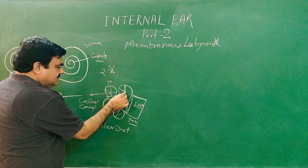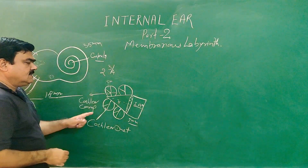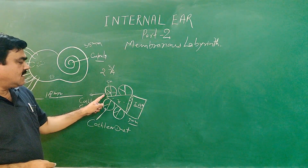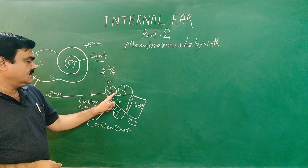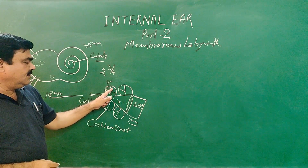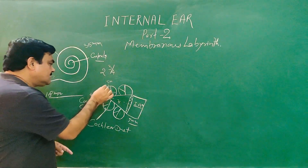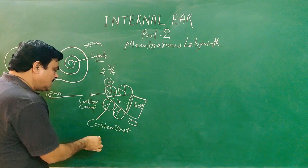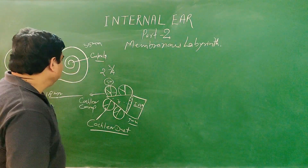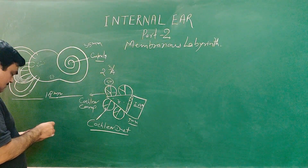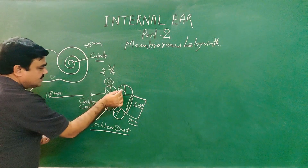By the spiral lamina, this canal is divided into 3 parts. This part towards the apex is scala vestibuli. Towards the base is scala tympani. And in between these two is scala media, which is also known as the cochlear duct. This part — the membrane — if you see the section passing through, in a previous lecture you have seen this spiral section.